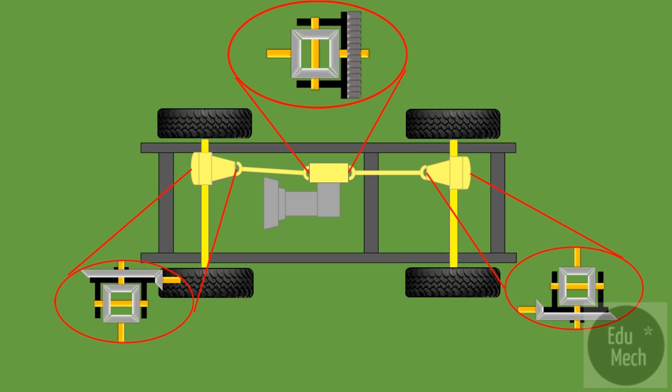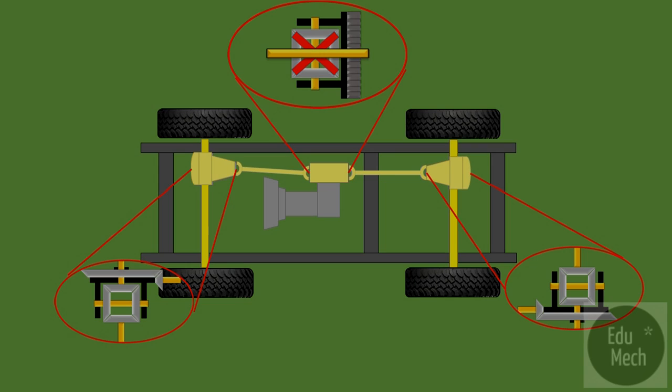However, this third differential will be locked when low range is selected, or the third diff lock is engaged by the driver, locking the front and rear propeller shafts together, as previously seen in the part-time four-wheel drive vehicle.